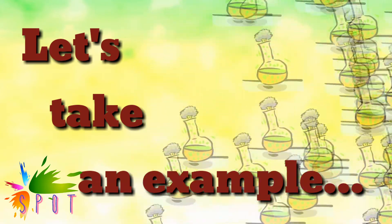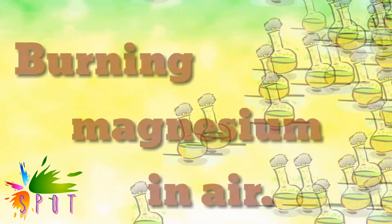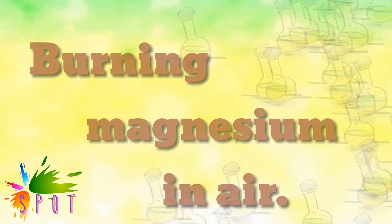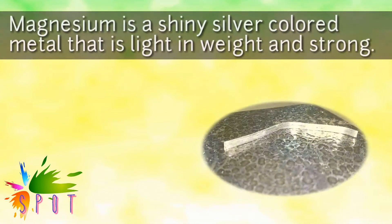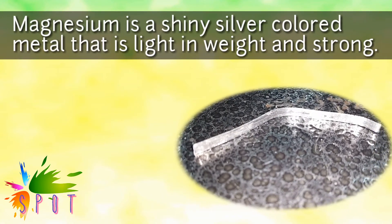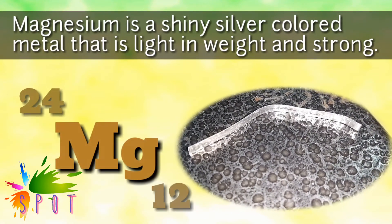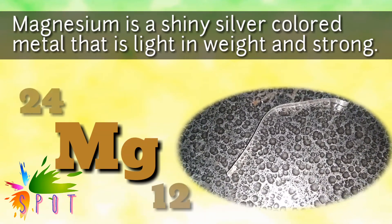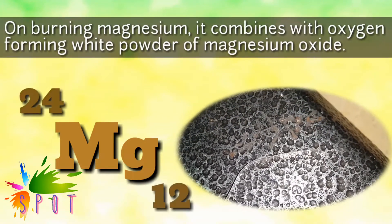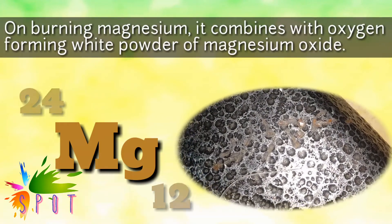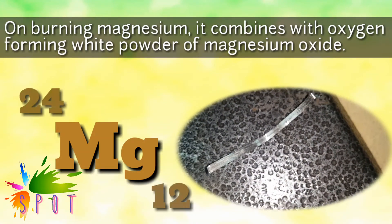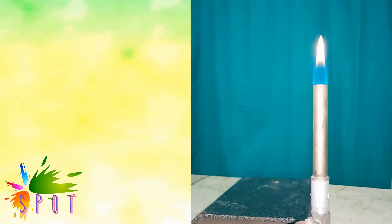Let's take an example. On burning magnesium, it combines with oxygen forming white powder of magnesium oxide.